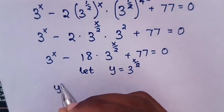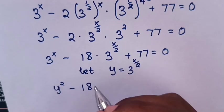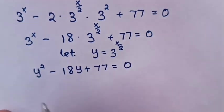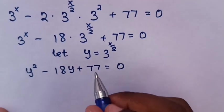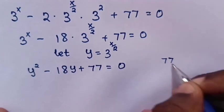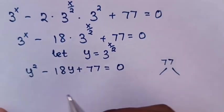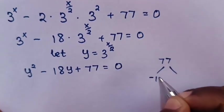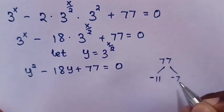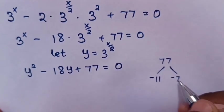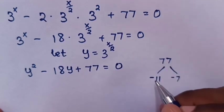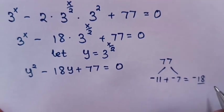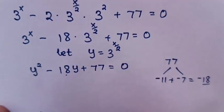With the substitution y = 3^(x/2), the equation becomes y² minus 18y plus 77 equals 0. We now factorize this quadratic equation. We need two numbers that multiply to 77 and add to negative 18, which are negative 11 and negative 7.